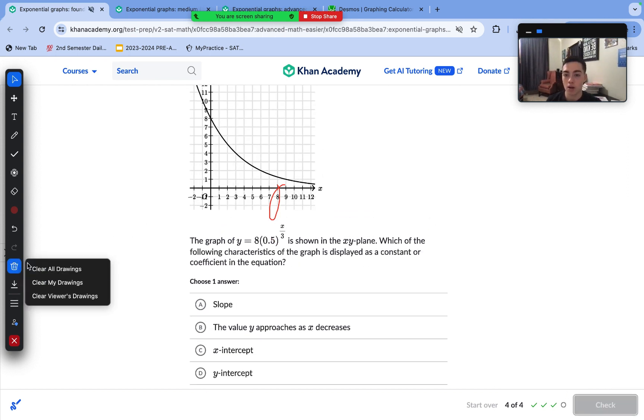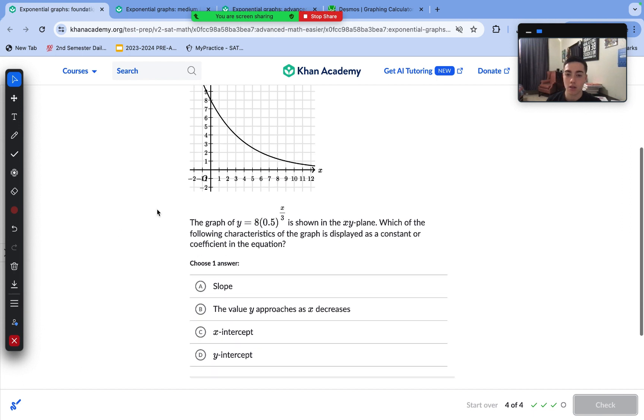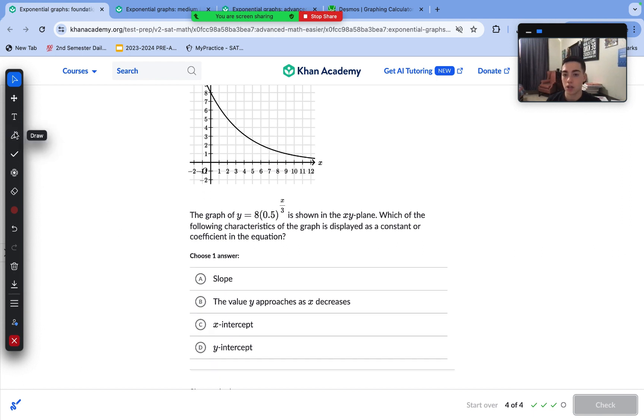Now onto this last one, which of the following characteristics is displayed as a constant or coefficient. Here we can see that the y-intercept is 8, and that is shown in our equation as 8. So answer choice D is the correct answer here.